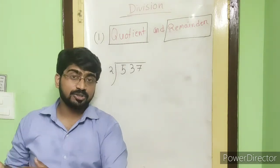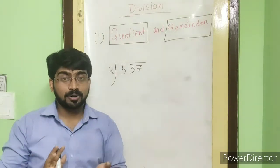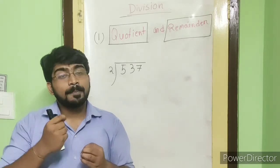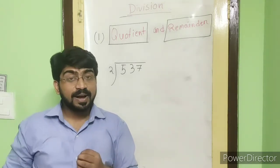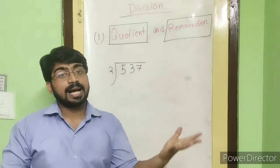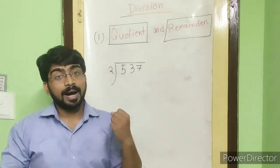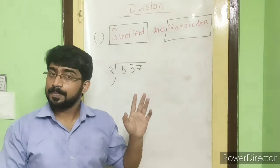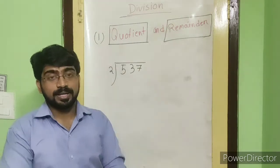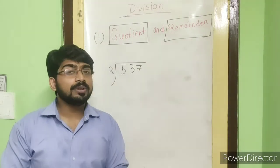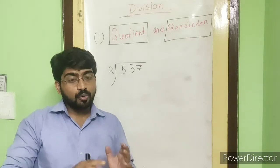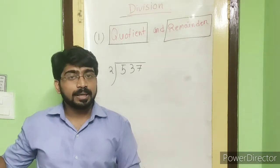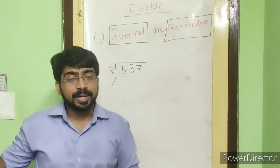When we divide one number by another — the dividend divided by the divisor — the answer we get is called the quotient. Now, what is the remainder? In some cases you will find that along with the quotient there will be another number; that number will be the remainder.